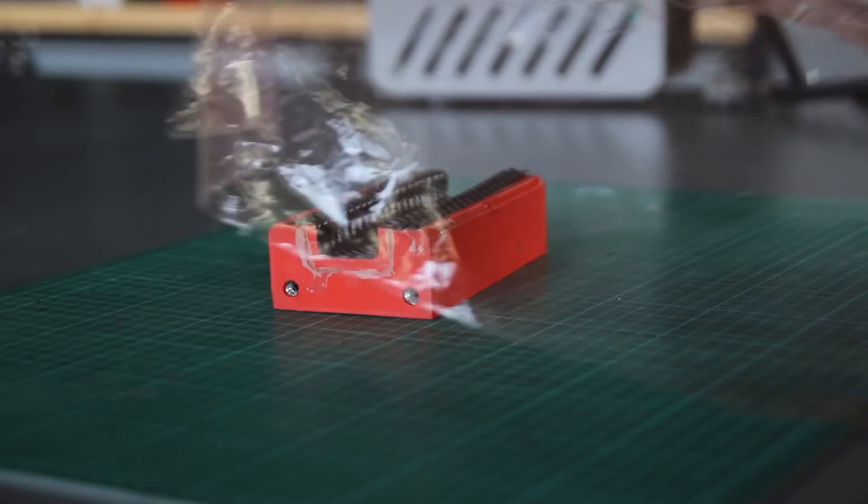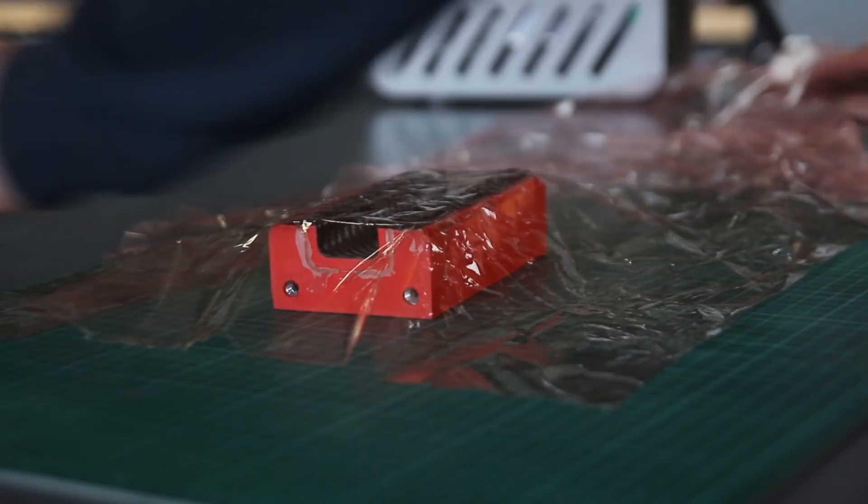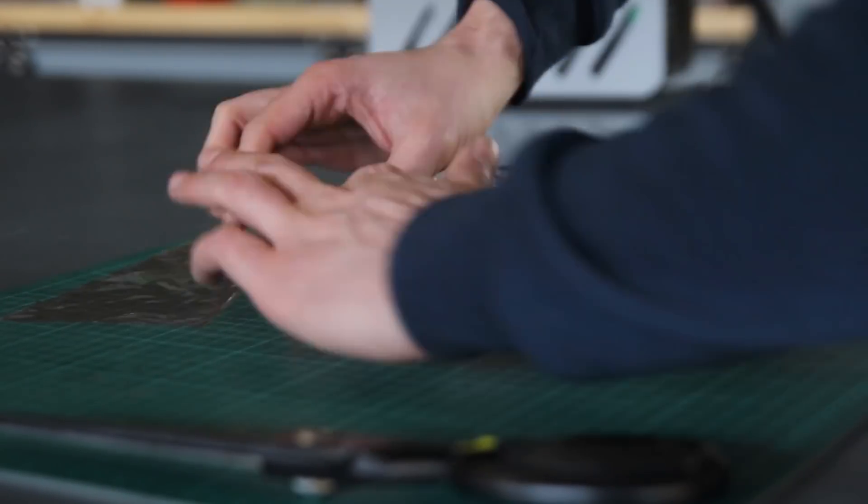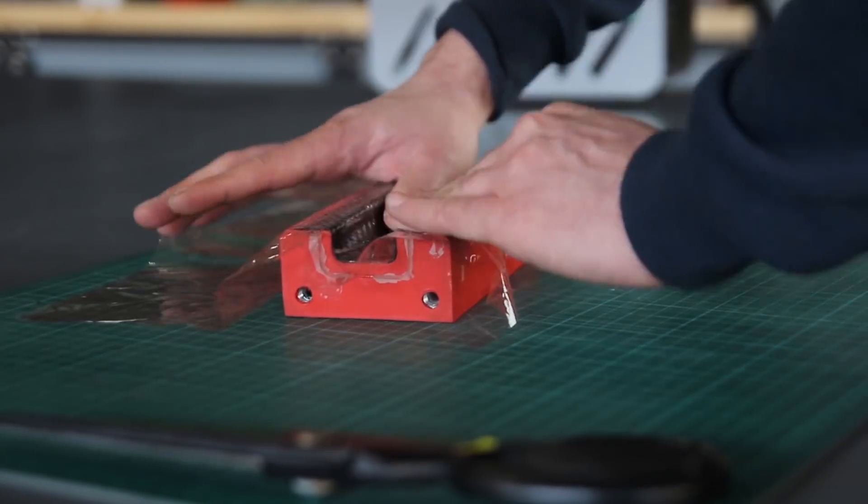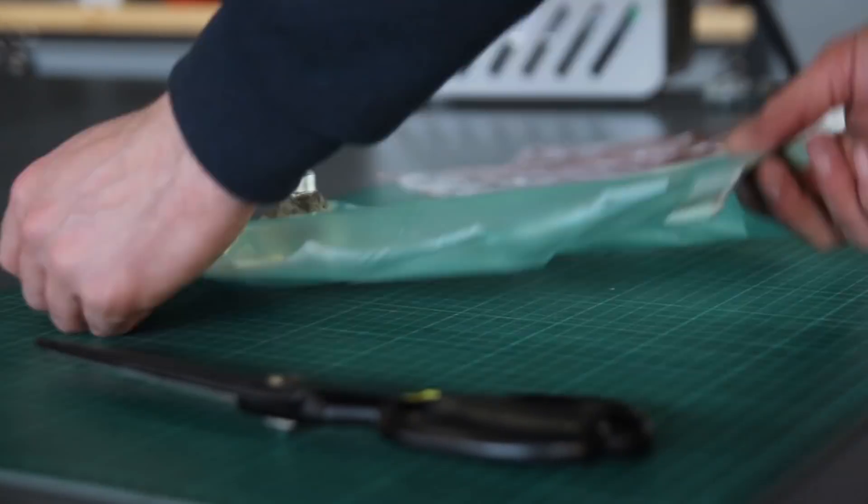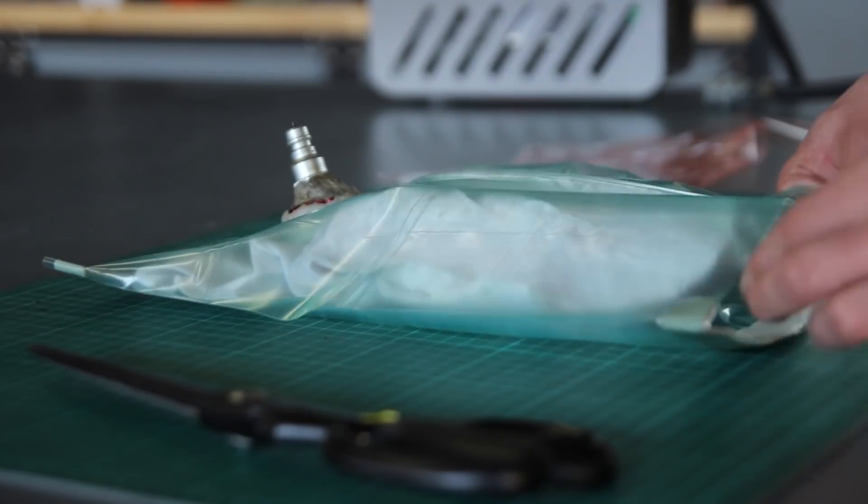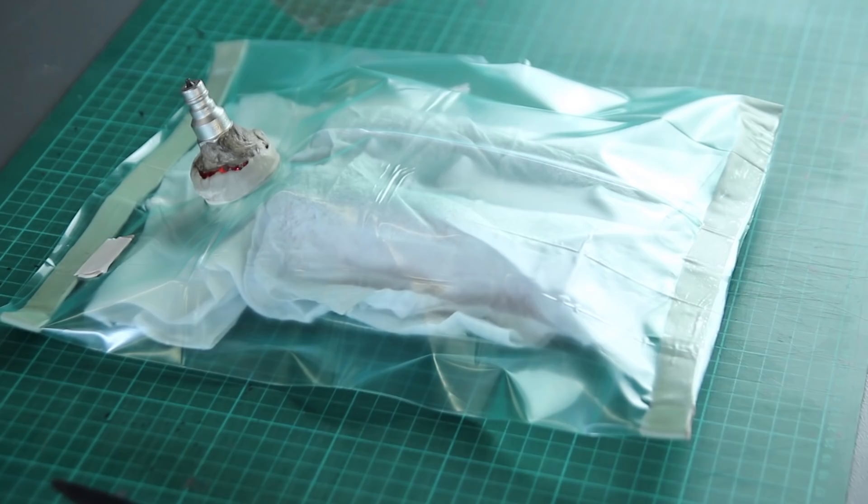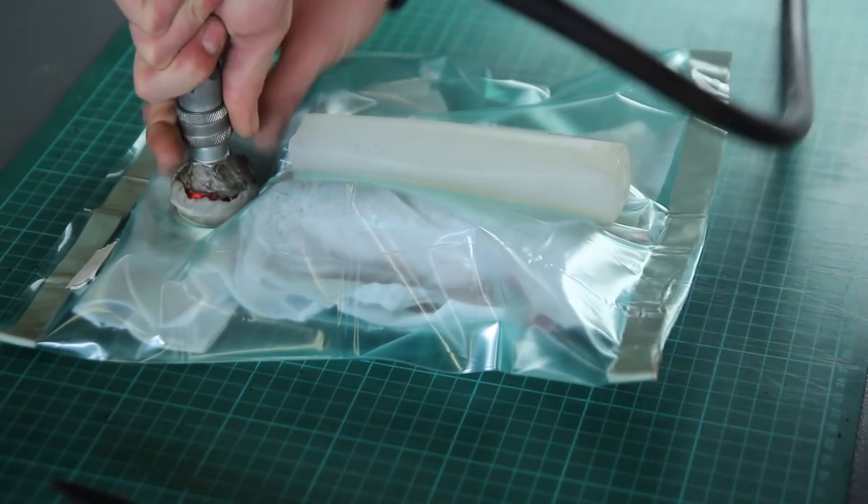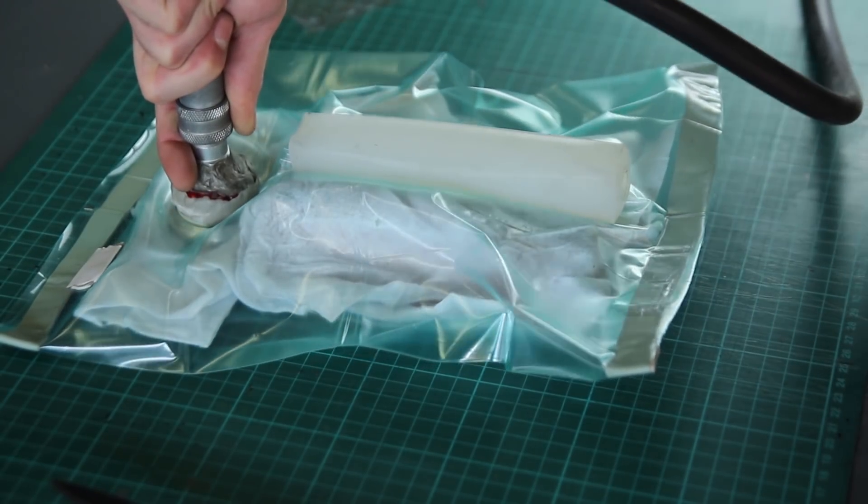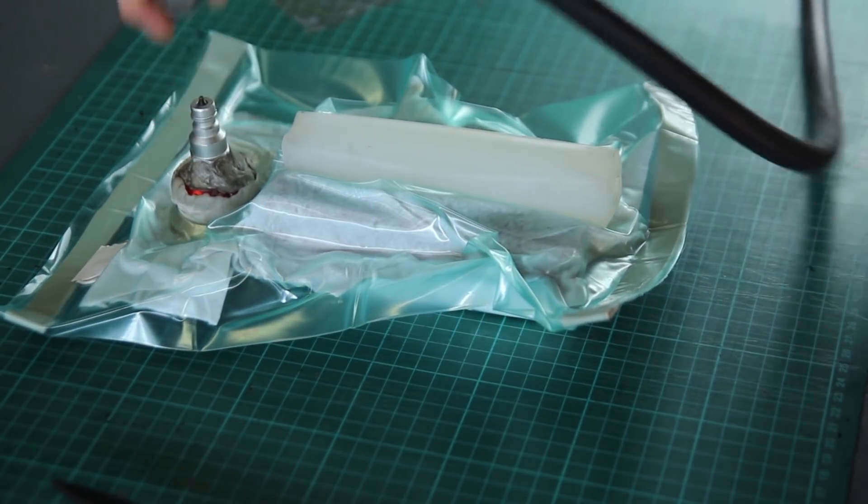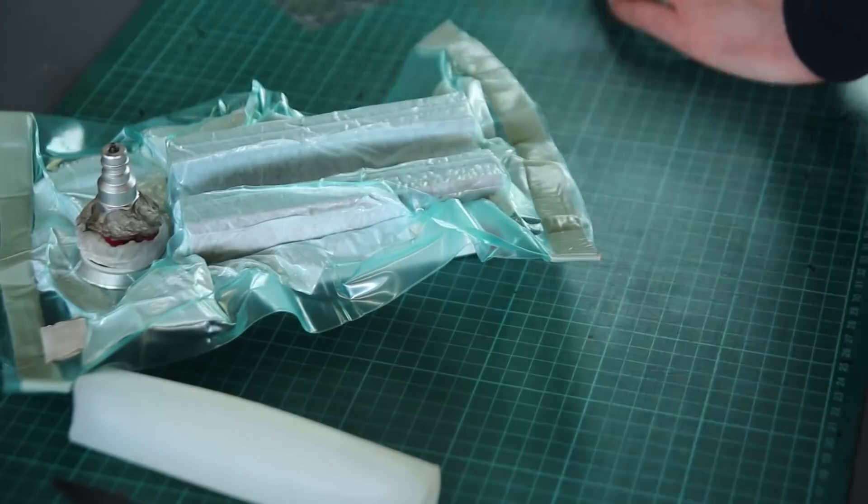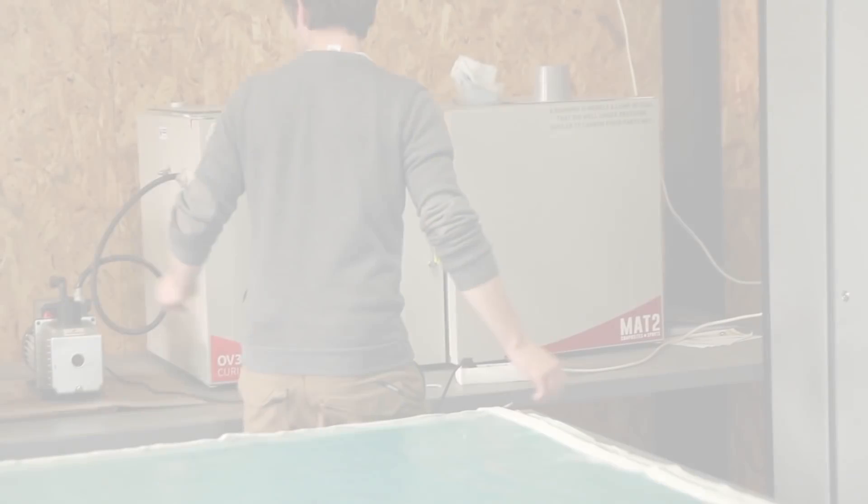This is after debulking and now the release film is added. This will prevent the resin from sticking to the breather fabric or the bag. It's just a thin film that prevents that. Then the breather fabric is added and everything is put into the mold. It's important to have the breather fabric, otherwise you wouldn't be able to pull a good vacuum as the bag will seal itself. If you have a leak it can cause problems.